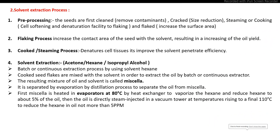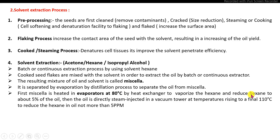In the solvent extraction process, the steps are: pre-processing and flaking, then cooking (also called steaming), and finally solvent extraction. The main solvents used are hexane, acetone, and isopropyl alcohol. The mixture of oil and solvent is called miscella. In distillation, the miscella is first evaporated continuously at 80 degrees Celsius, then remaining solvent is removed by steam injection up to 110 degrees Celsius, reducing hexane to no more than 5 ppm.